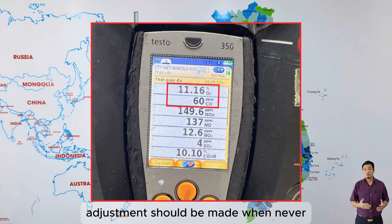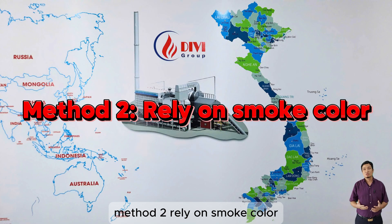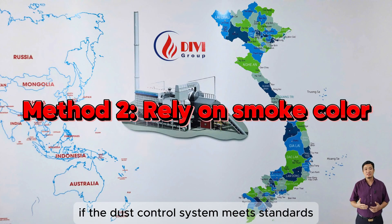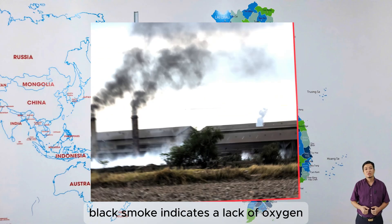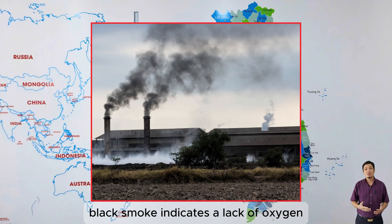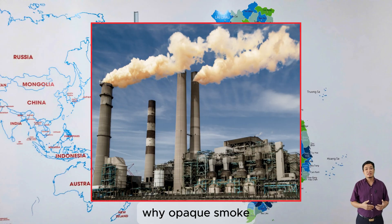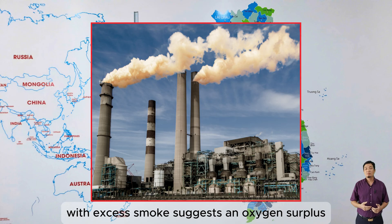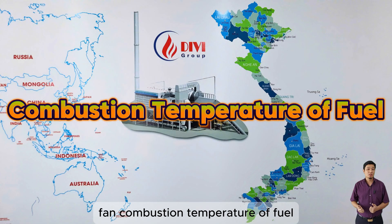Adjustments should be made whenever there is a change in fuel. Method 2: rely on smoke color. This method only applies if the dust control system meets standards and the smoke color is due to CO. Black smoke indicates a lack of oxygen, requiring an increase in the air supply fan. White opaque smoke suggests an oxygen surplus, necessitating a decrease in the air supply fan.